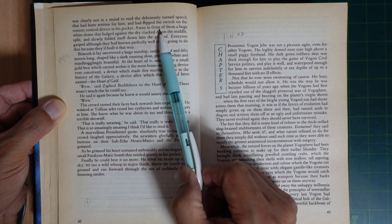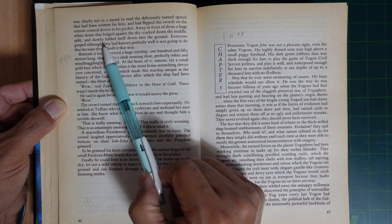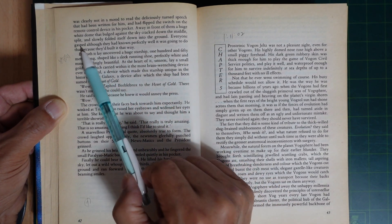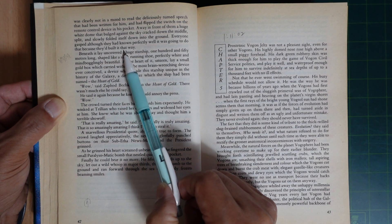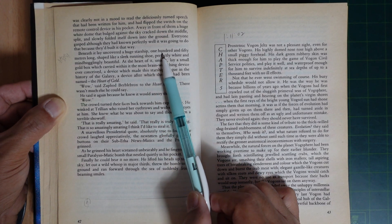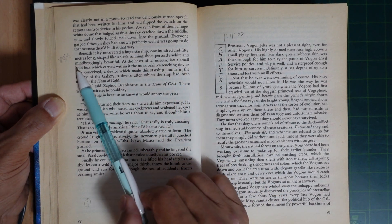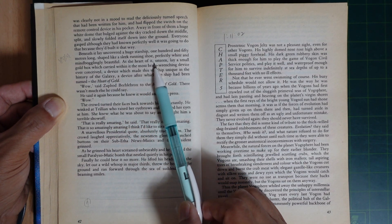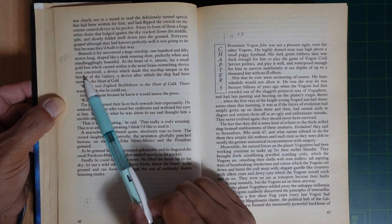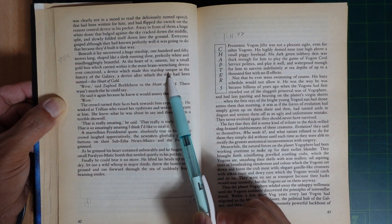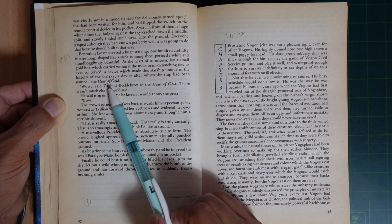Away in front of them, a huge white dome that bulged against the sky cracked down the middle, split, and slowly pulled itself down into the ground. Everyone gasped, although they had known perfectly well it was going to do that because they'd built it that way. Beneath it, they uncovered a huge starship, one hundred fifty meters long, shaped like a sleek running shoe, perfectly white and mind-bogglingly beautiful. At the heart of it, unseen, lay a small gold box which carried within it the most brain-wrenching device ever conceived, a device which made this starship unique in the history of the galaxy, a device after which the ship had been named: the Heart of Gold.